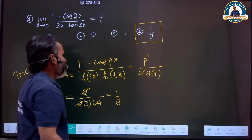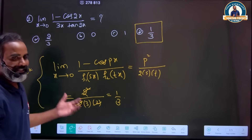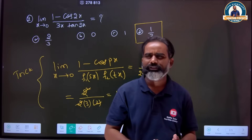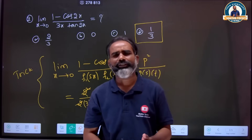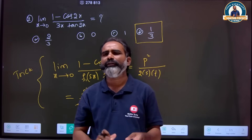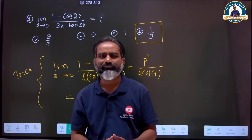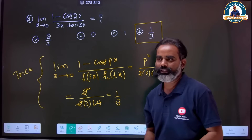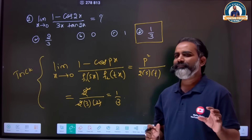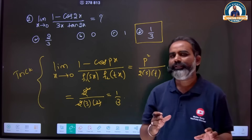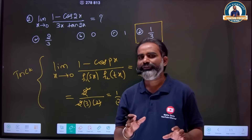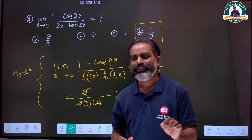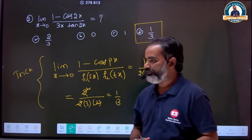This is a standard result, commonly appearing in the Comet exam, KCT exam, and state level exams. Chapter-wise, there are a maximum of 30 to 35 tricks to definitely use.